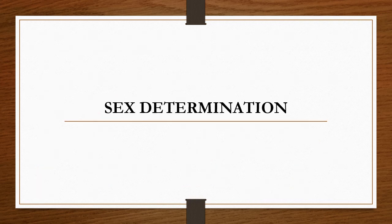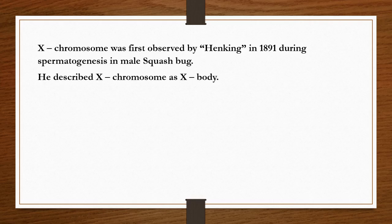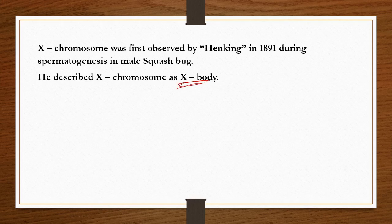The next concept is sex determination. The X chromosome was first observed by Henking in 1891 during spermatogenesis in the squash bug. He described the X chromosome as 'X body' — he did not name it X chromosome. The X chromosome was first discovered as X body by Henking.